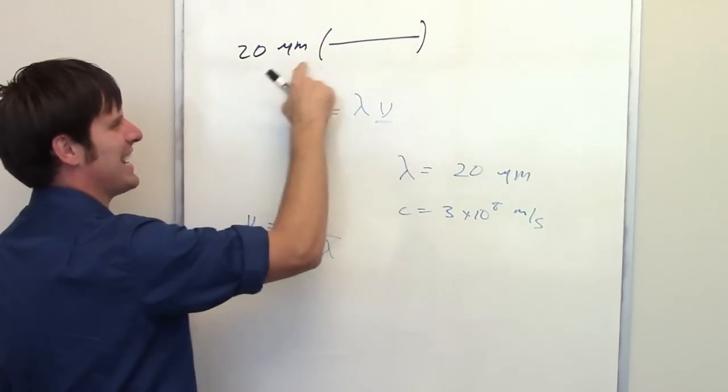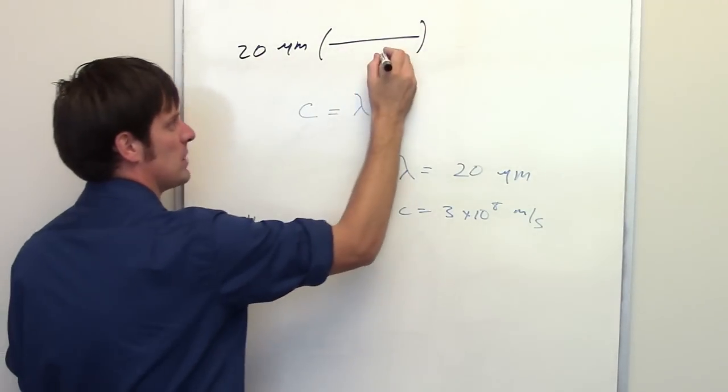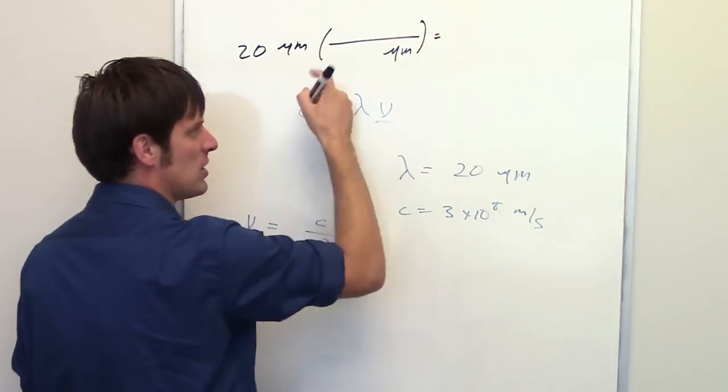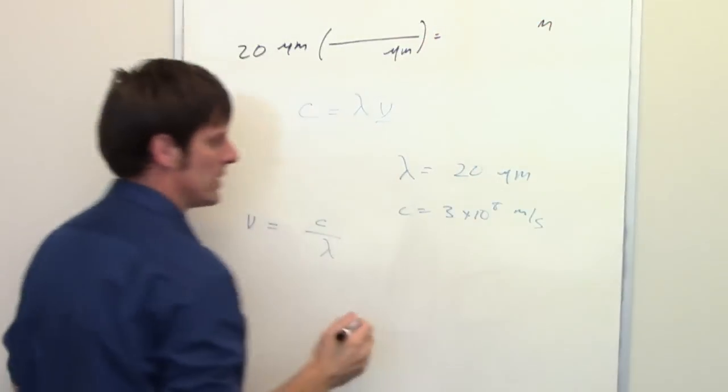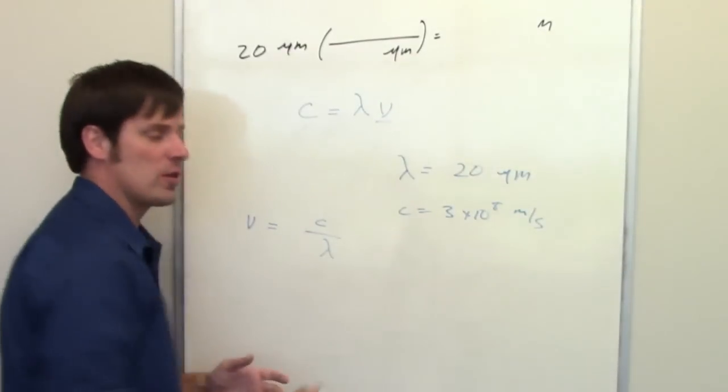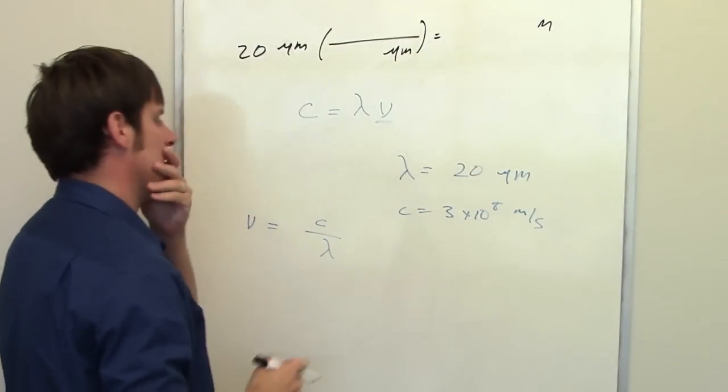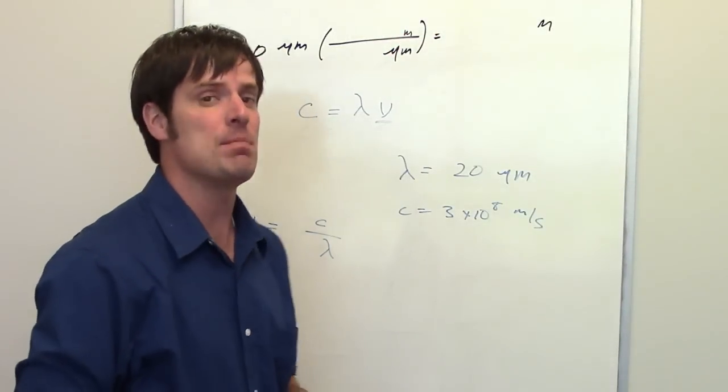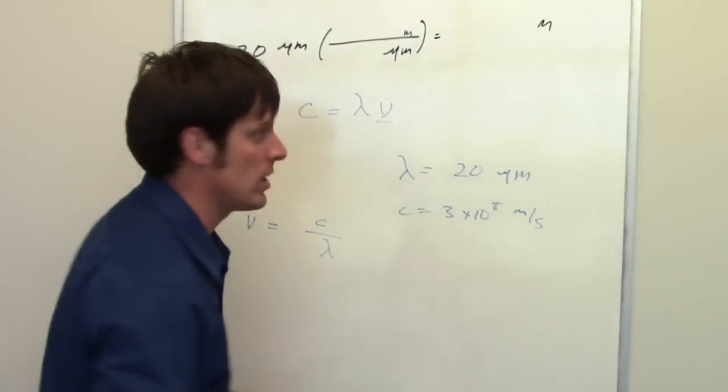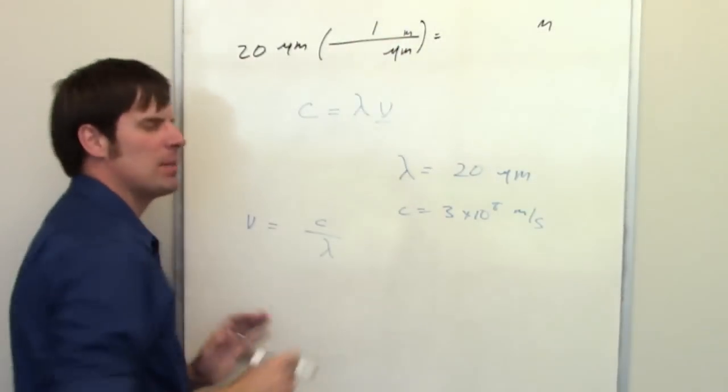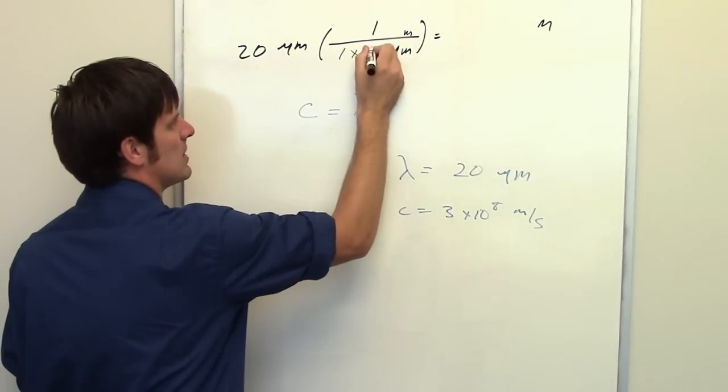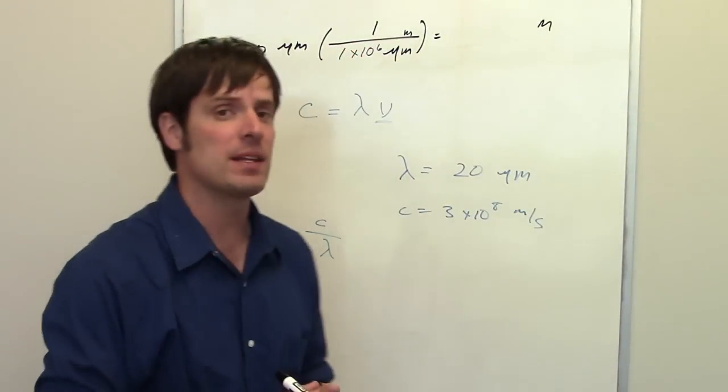In the denominator, we want to cancel out the units micrometers, so I'm going to put micrometers in the denominator. I want to eventually convert this into meters. The reason is because meters are the length units in my value of speed of light. So I'll put meters in the numerator. In one meter, how many micrometers are there? There are 1 times 10 to the sixth, and that should be something that you memorize.